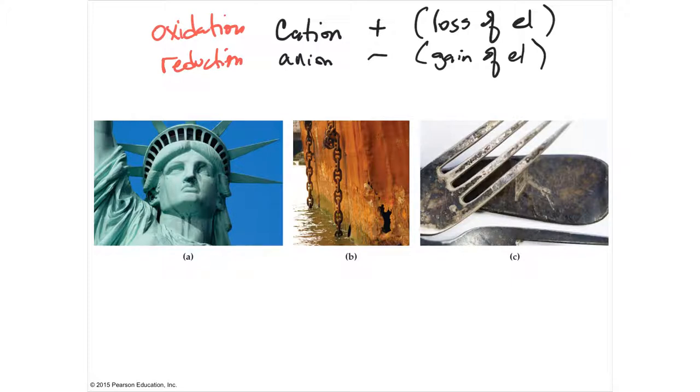All right, so oxidation is becoming positive, making something positive. Reduction is making something negative. So oxidation and reduction, along with acid bases, are the two big groups of reactions in nature.